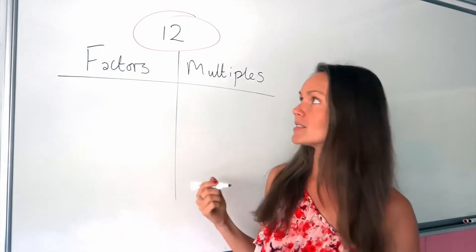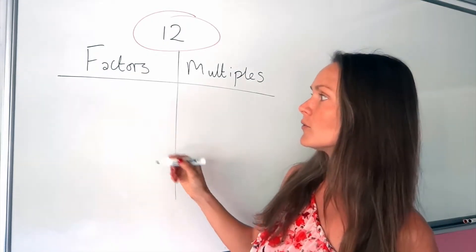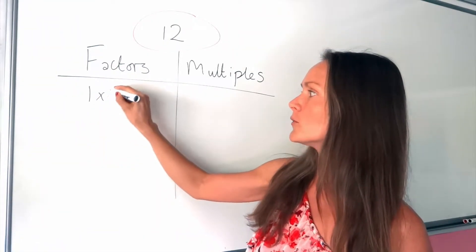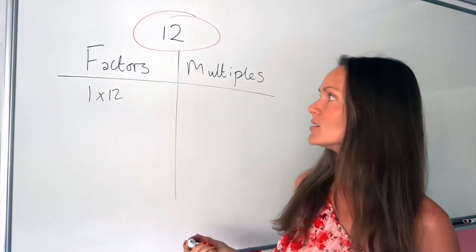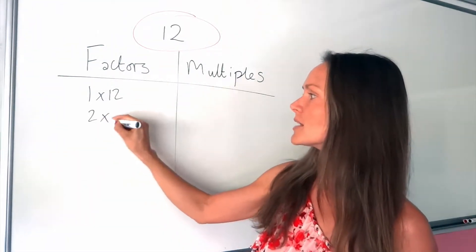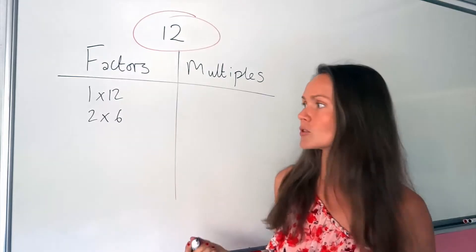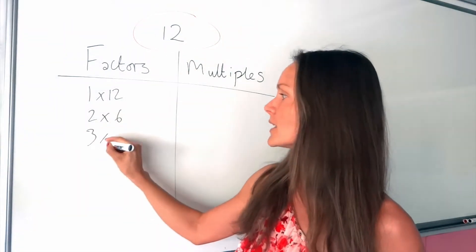So there are several for this number 12. You could have 1 times 12, so 1 and 12 are both factors. You could have 2 times 6, so 2 and 6 are also factors. Or you could have 3 times 4.